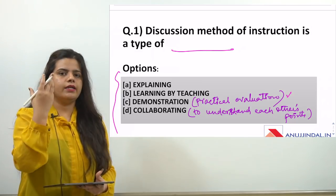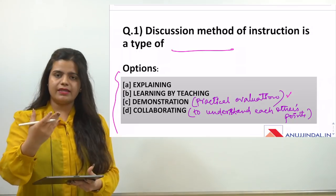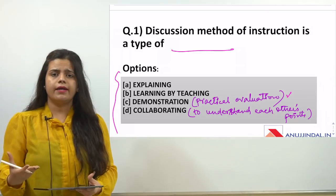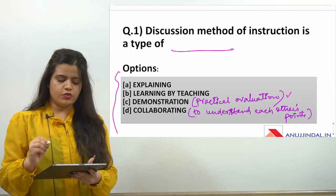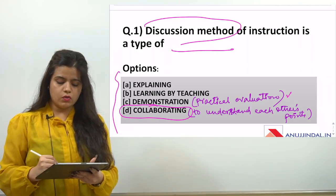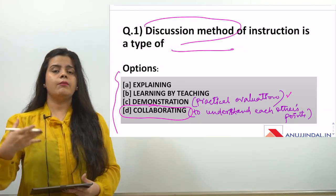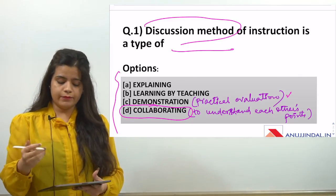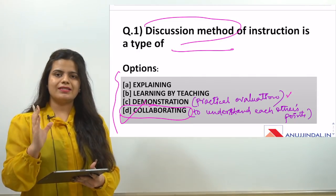In discussion method, if you are saying something is right, you are also trying to hear and understand each other's points. That is collaboration — trying to understand each other's points mutually, which matches the definition of discussion method. So the answer is collaborating.